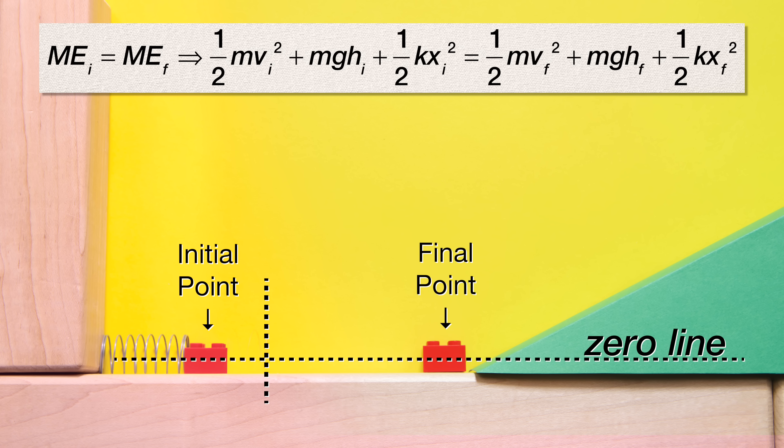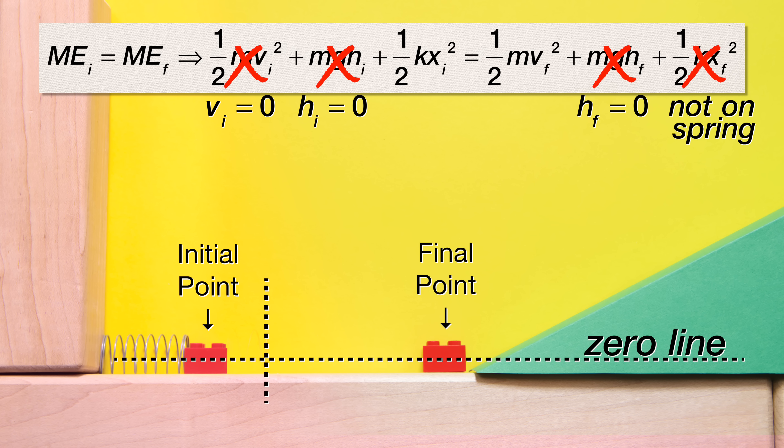Now we need to determine which energies are zero. The height initial and final are both zero, so the gravitational potential energy initial and final are both zero. The initial velocity of the block is zero, so the initial kinetic energy is zero. And the block is no longer on the spring at the final point, so the final elastic potential energy is zero.